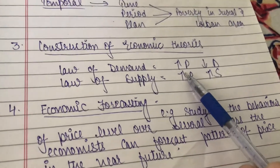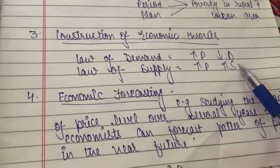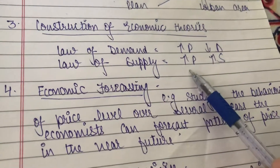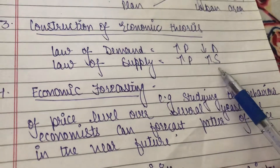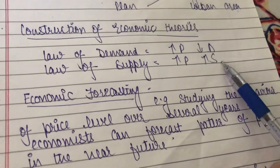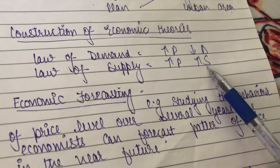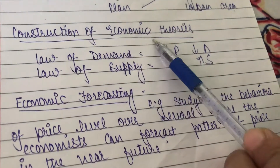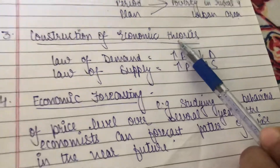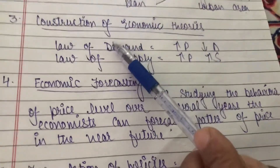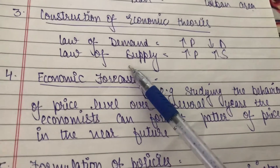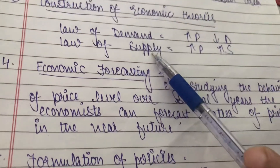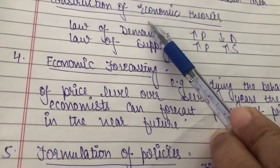And the law of supply says that whenever prices increase, the producer increases supply because the producer wants to earn more profit. So by statistics we can construct economic theories. The economic theories include the law of demand, law of supply, and many others — I have just given two examples.